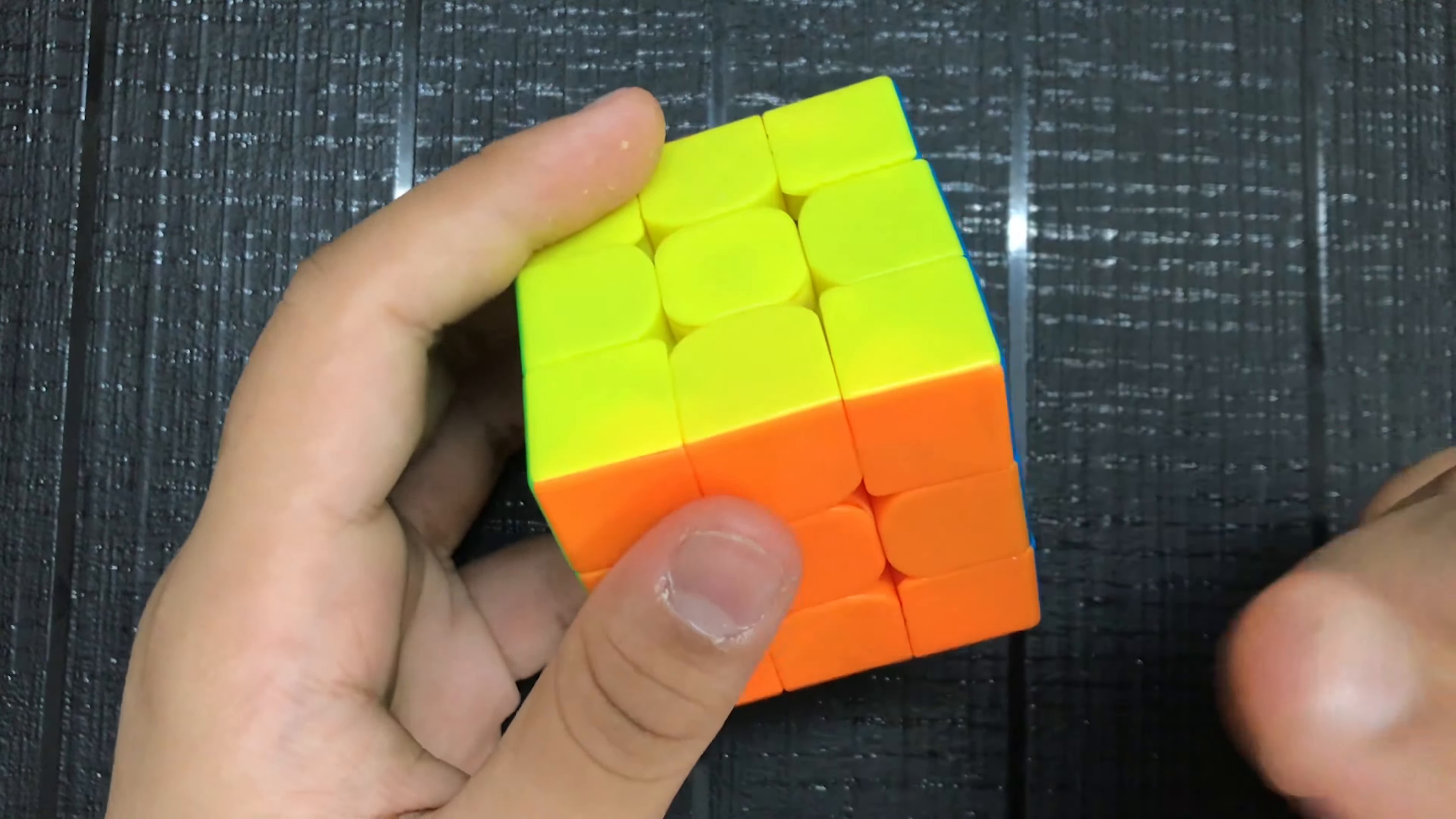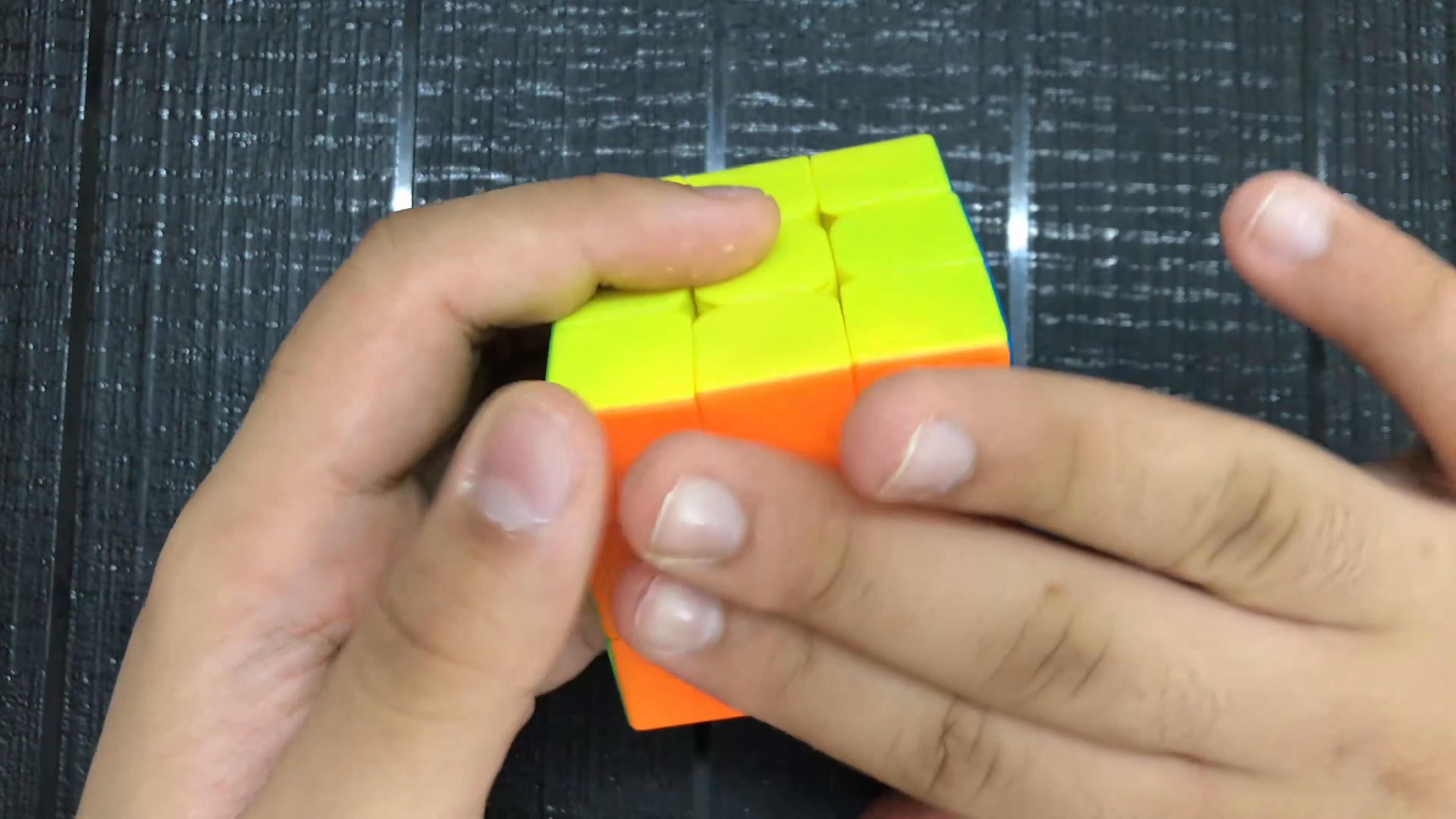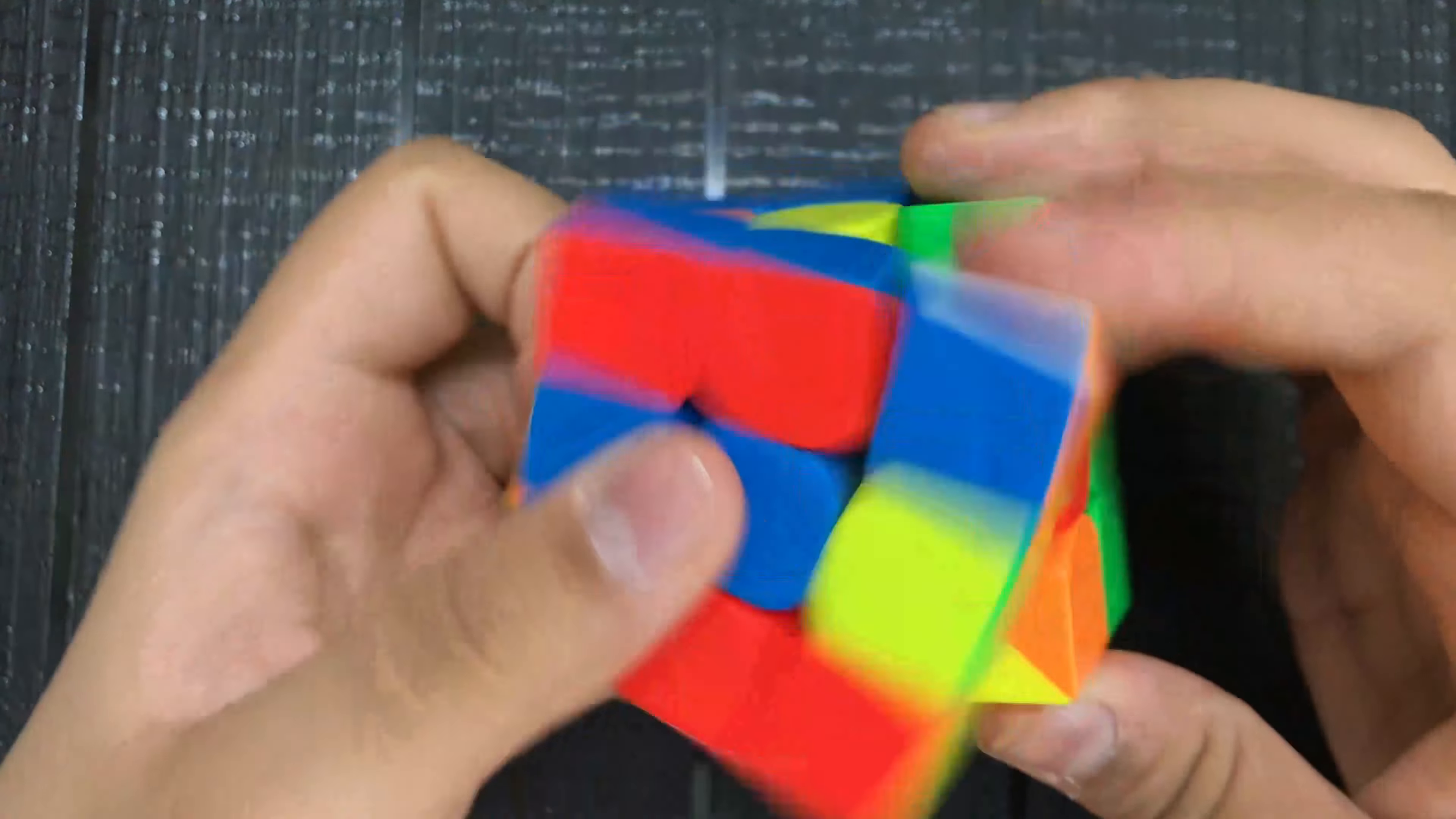So here's the cube. I magnetized the, I added more magnets to the yellow side and the orange side. So, my hands are pretty slippery. Let's see.